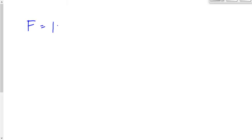We say that F is equal to either kx or F is equal to negative kx. What's the difference between those two equations? The negative sign provides for us the restoring force — the force that pulls this system back to where it came from — and kx is the applied force.